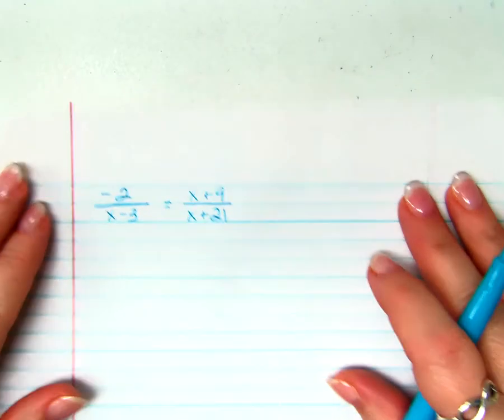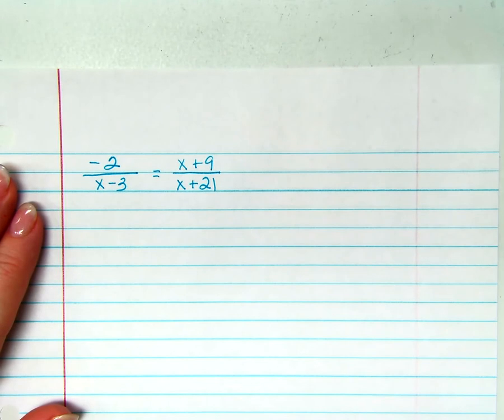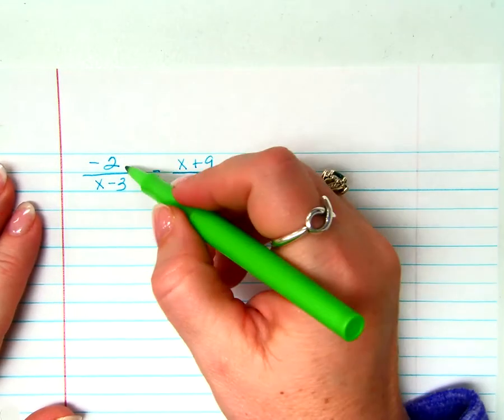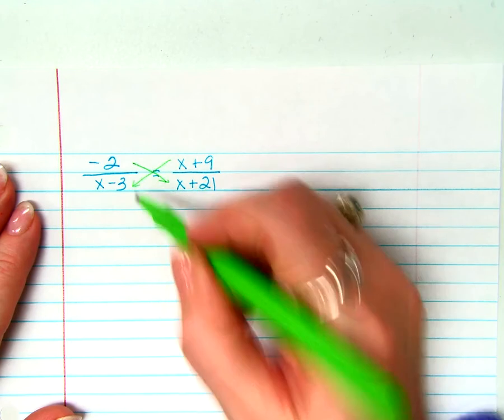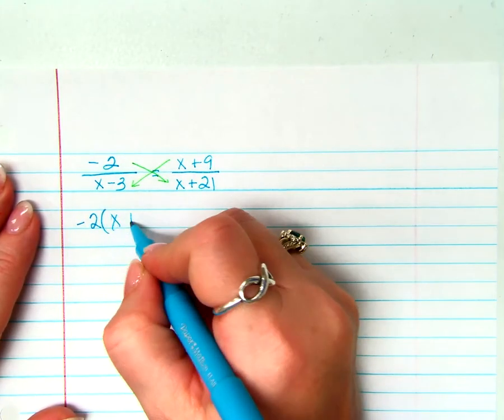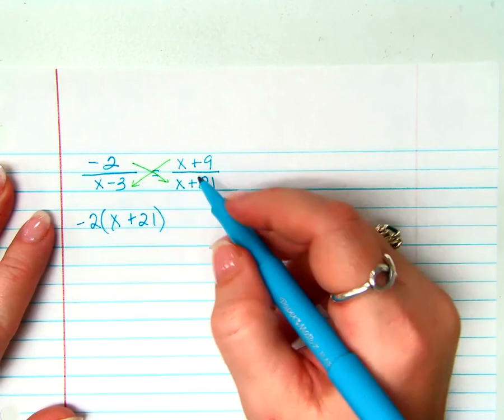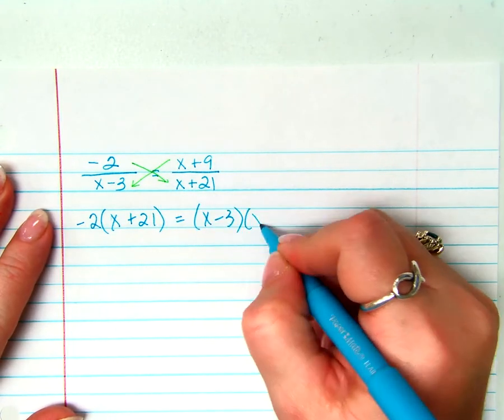Here's another problem. Slightly different, shows you it's a different thing. It looks similar to begin with because, again, two fractions set equal to each other. Cross multiply, cross multiply. So I get negative 2 times x plus 21, and on this side I get equals x minus 3 times x plus 9.